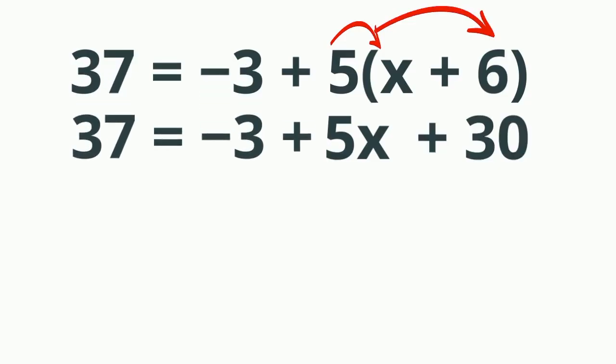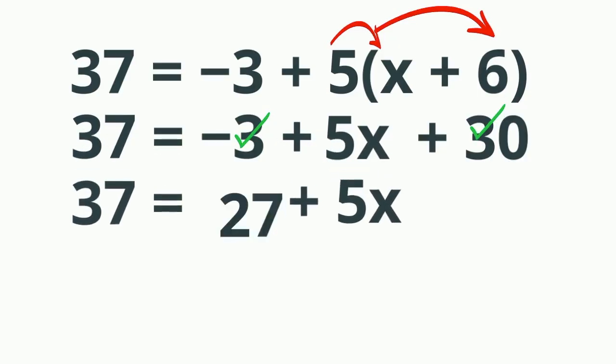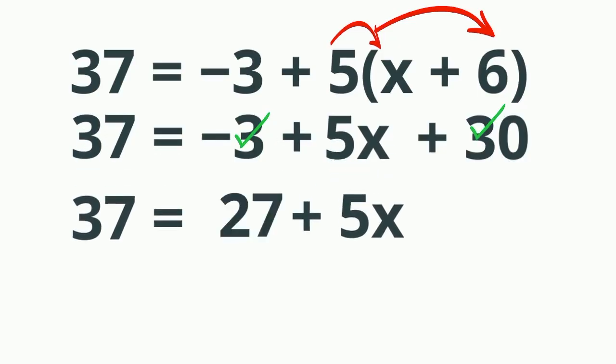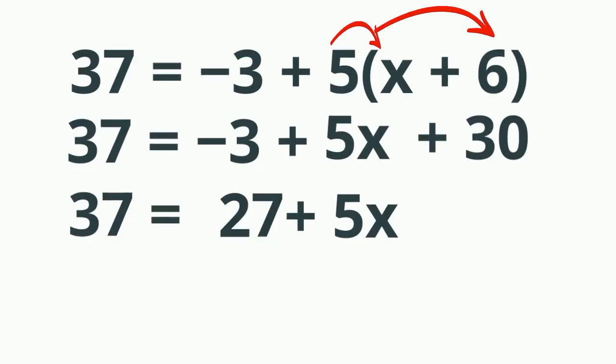Now I can combine like terms. I'll combine 30 and negative 3 to give me 27. Bring everything else down. Now, to isolate the 5x, I'll subtract 27 from both sides. When I do this, the 27 cancels.